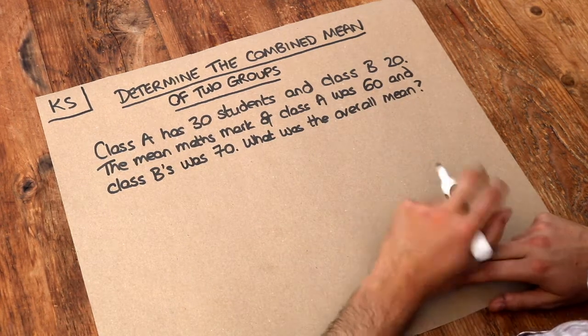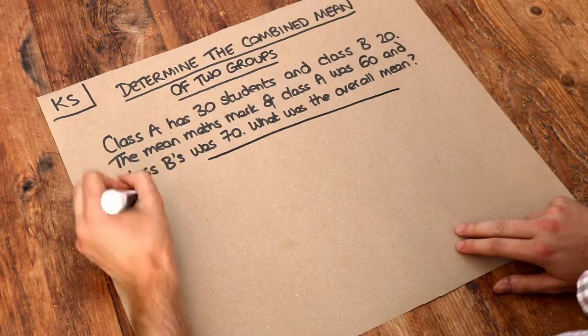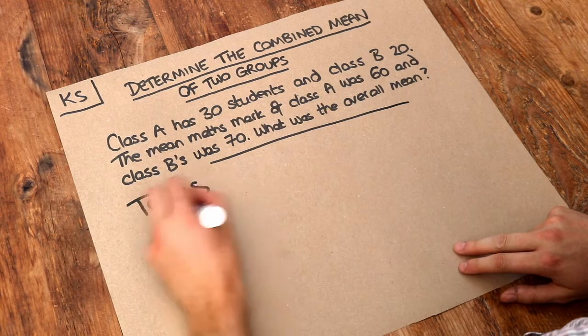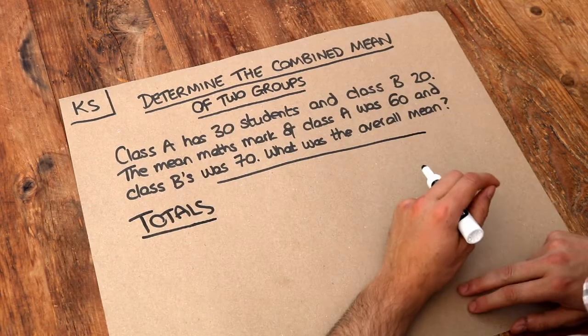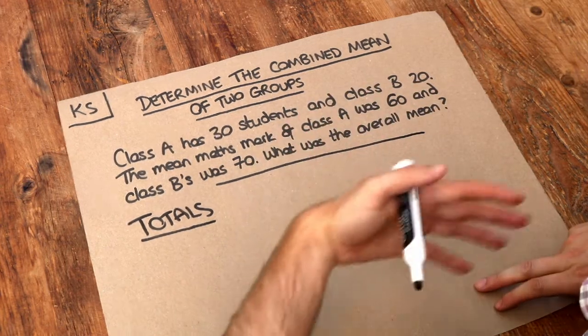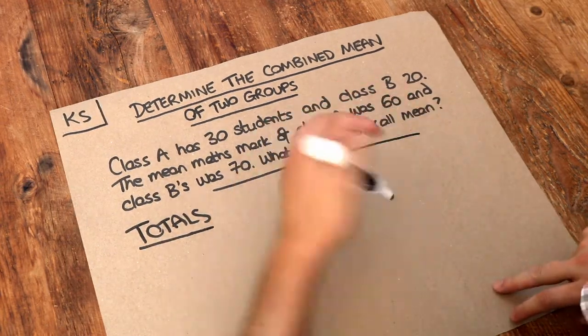Now the key to solving a question like this is to think about totals. So what was the total mark of class A? What was the total mark of class B? And then if we know the total mark of everyone then we can divide by how many people there are to find the overall mean.